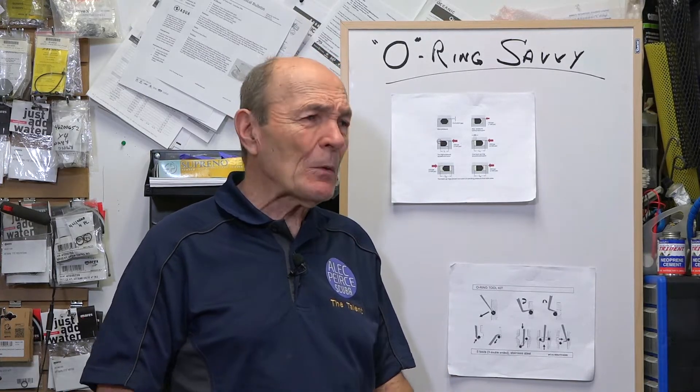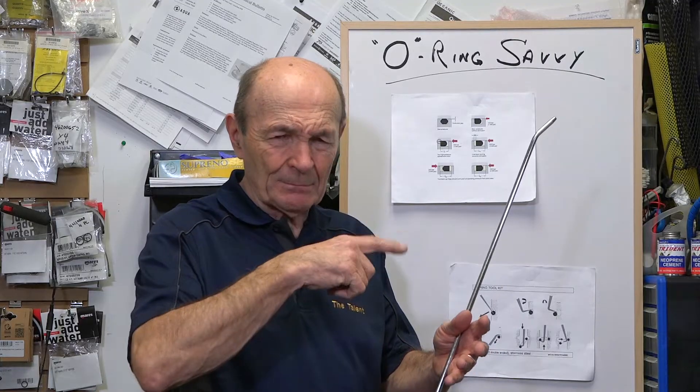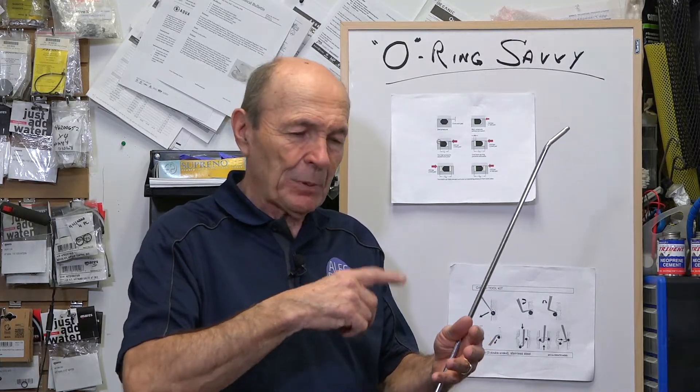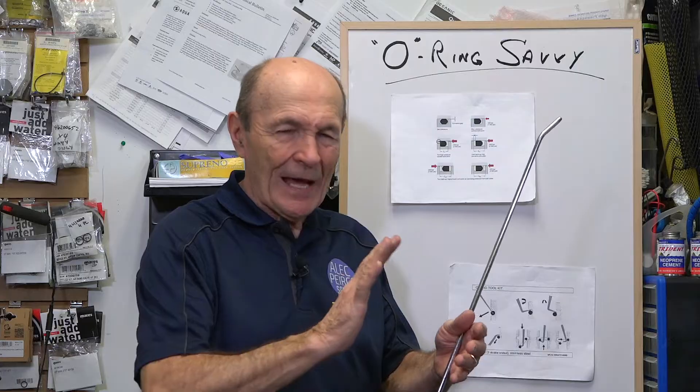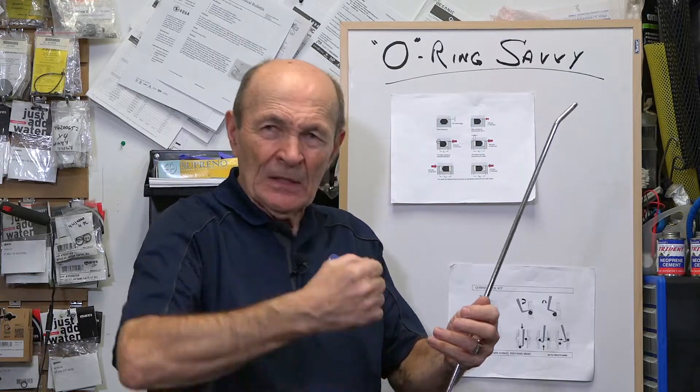I won't bore you with the history of O-rings, but at one time, when I started diving in 1958, there were no O-rings. If we wanted to seal something, we would put some plastic or some rubber in there, flat washer, and we would jam it really tightly.